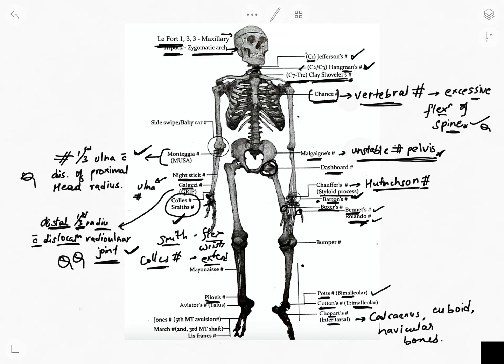Pilon fracture is a fracture of the distal part of the tibia involving its articular surface of the ankle joint. Jones fracture is the fifth metatarsal avulsion fracture — this is important.